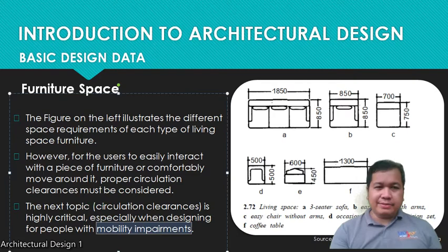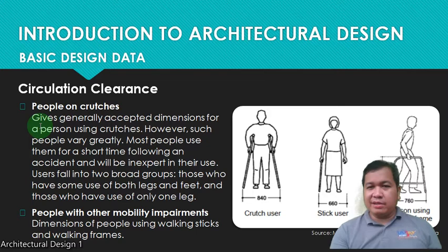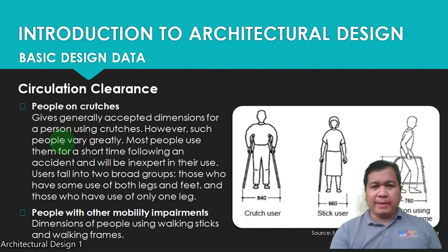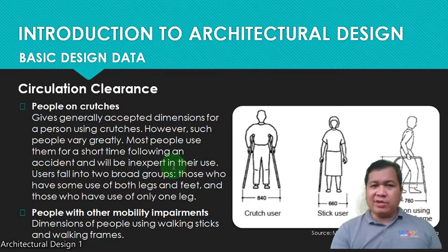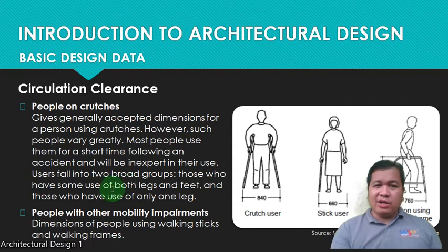This is the circulation clearance for persons with crutches — someone using sticks or supports when walking. Generally accepted dimensions are given for a person using crutches; however, such people vary greatly. Most people use them for a short time following an accident. Users fall into two broad groups: those who have some use of both legs and feet, and those who have use of only one leg.